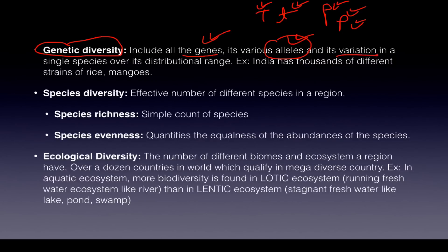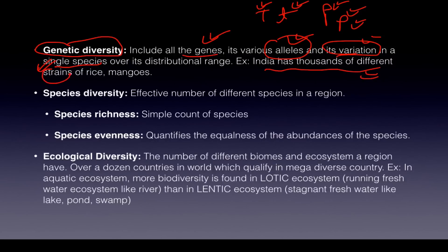Genetic diversity also includes variation within a single species — this is your total genetic pool. That is why we do not marry our relatives, because the genetic diversity is very small among relatives and the chance of inbreeding depression increases. For example, India has thousands of different strains of rice and mangoes — there are twenty thousand to fifty thousand species of rice which exist here.